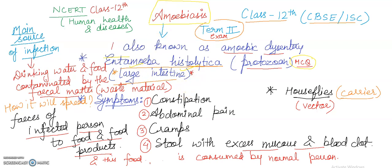The next thing is where Entamoeba histolytica is found in the human body. It is found in the intestine — specifically in the large intestine. Now we will discuss all the symptoms.